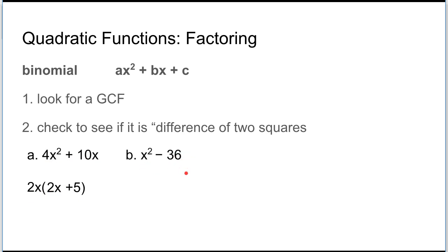Try this one. This is a difference of two squares — both terms are perfect squares and they're being subtracted. We make two sets of parentheses with one plus and one minus, then take the square root of both terms, giving us (x + 6)(x - 6). You can double-check it by multiplying back to get the original.